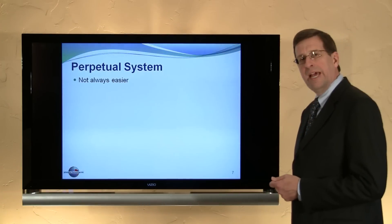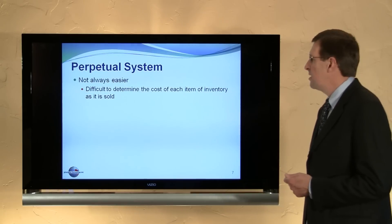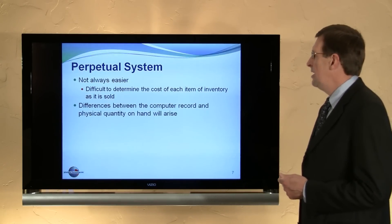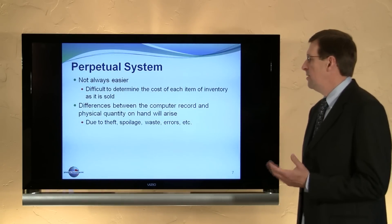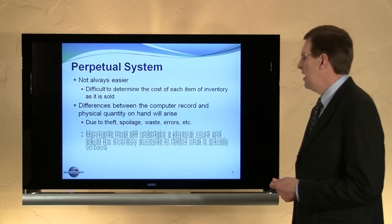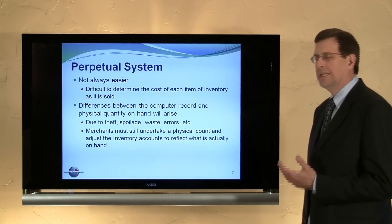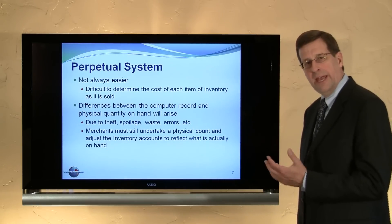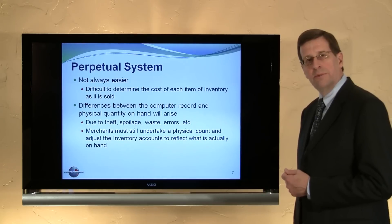The perpetual system has some disadvantages — it's not always easier. It's difficult to determine the cost of each item of inventory as it's sold. There can be differences between the computer record and physical quantities on hand due to things such as theft, waste, spoilage, errors, and the like. So merchants still need to undertake a physical count of goods at the end of each accounting period to determine what inventory is really on hand and adjust perpetual inventory records to match that.